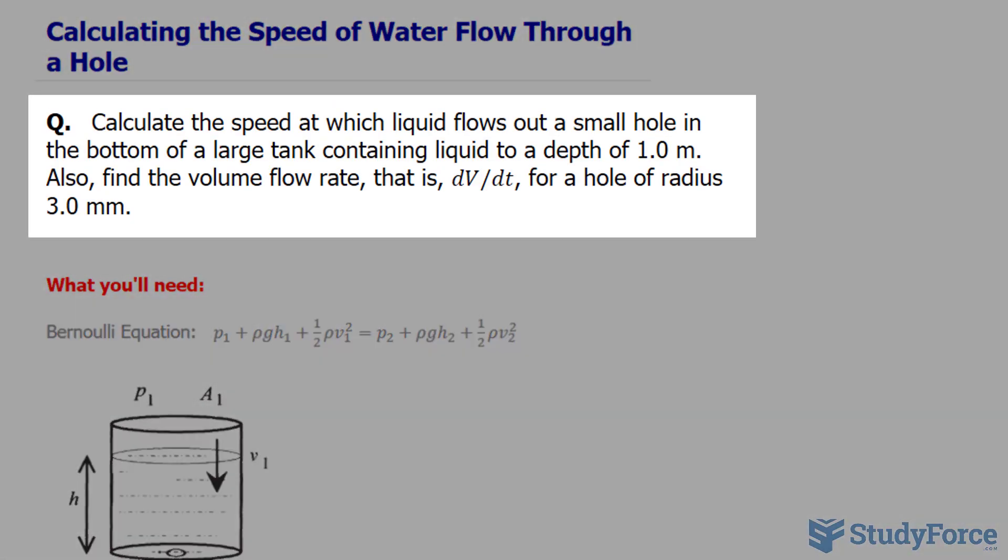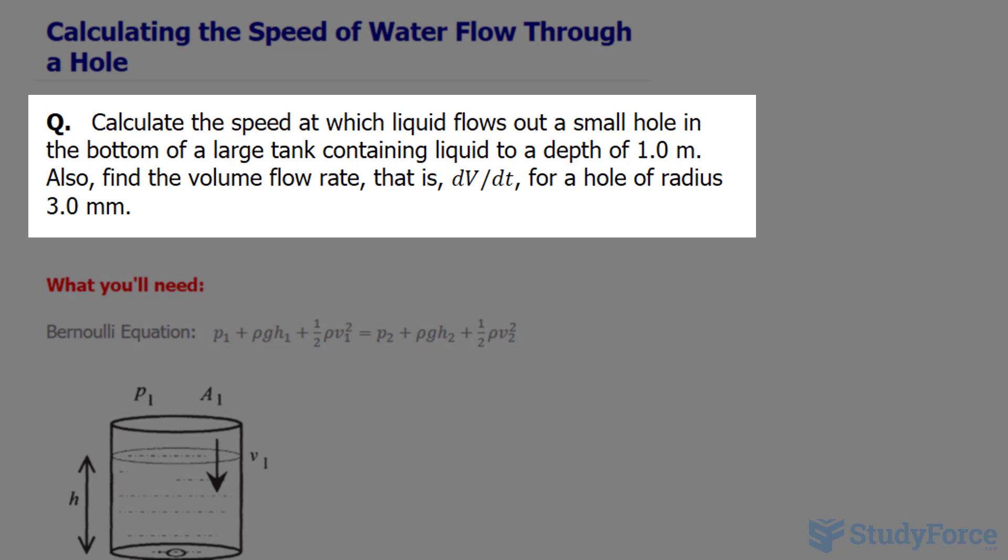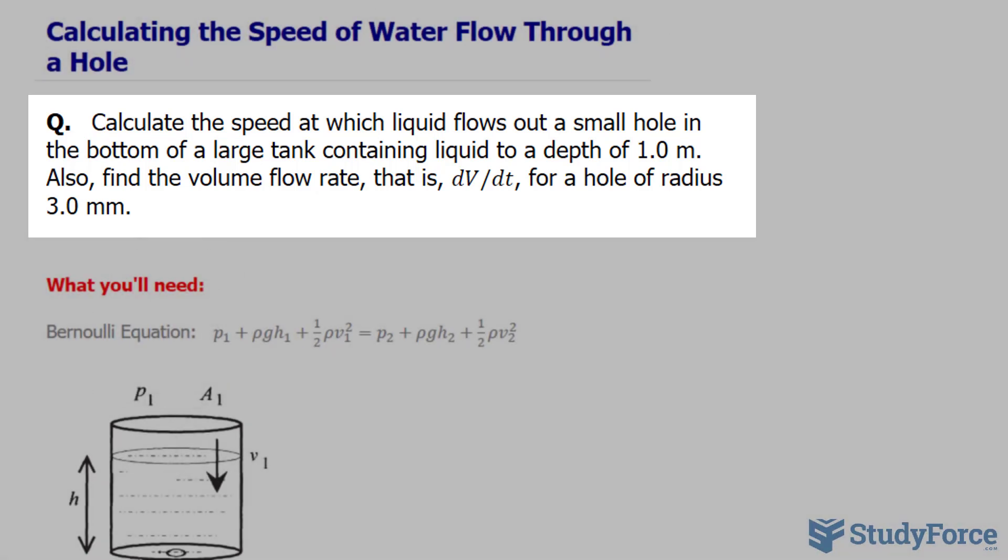So the question reads, calculate the speed at which liquid flows out a small hole in the bottom of a large tank containing liquid to a depth of 1.0 meters. Also, find the volume flow rate, that is dV/dt, for a hole of radius 3.0 millimeters.